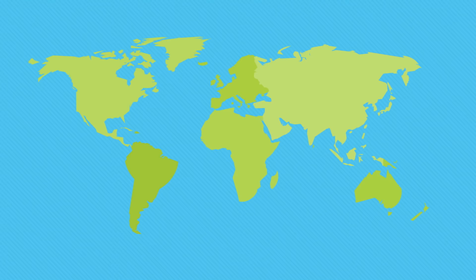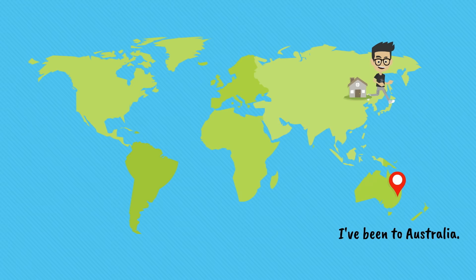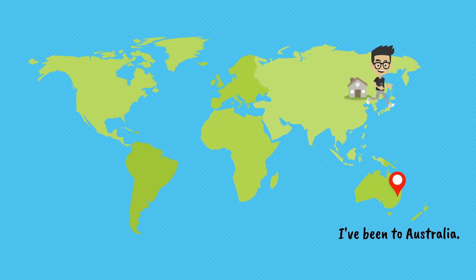Let's use an example: 'I've been to Australia.' This means that sometime in the past you went to Australia. Be careful of the difference between 'been' and 'gone.' 'Gone' means that you went there but you're still not back yet. 'Been' means that you went there and then you left. And of course, we don't know when you went — it could have been last year or 10 years ago.